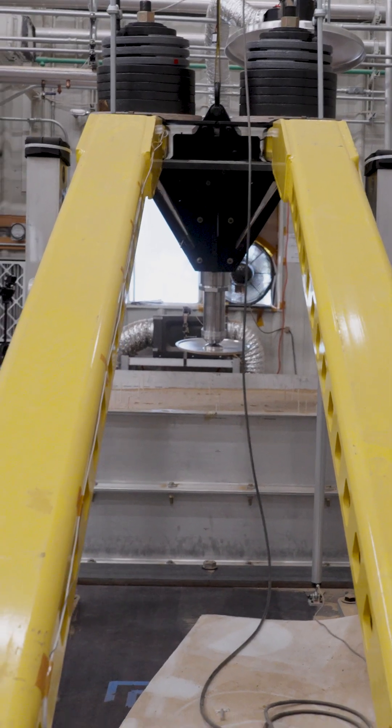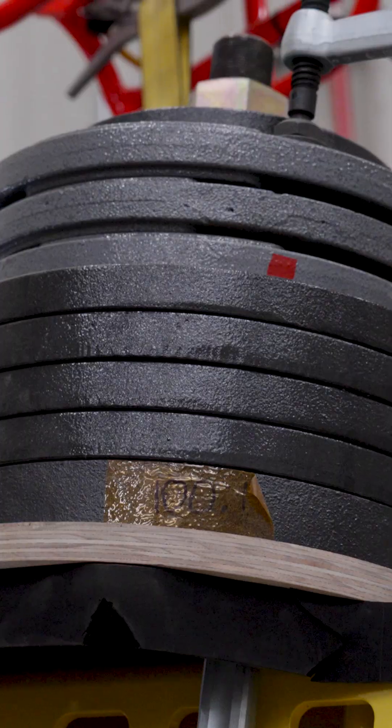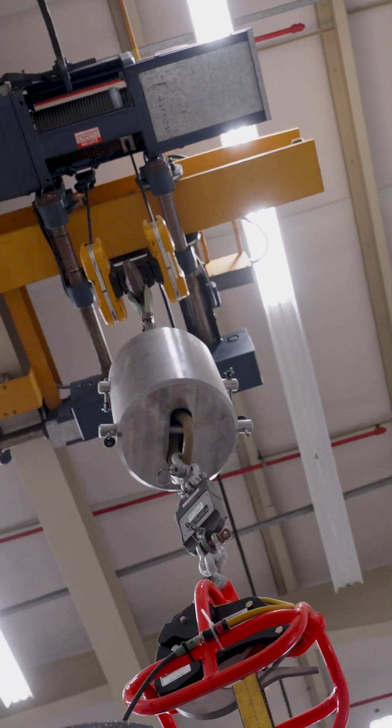We're able to vary impact energy and velocity, and the way we do that in practice is by changing the amount of weights that we have on our pendulum, and how high we lift the pendulum.